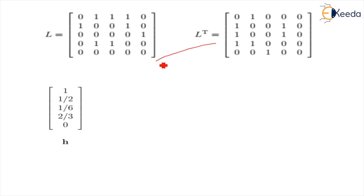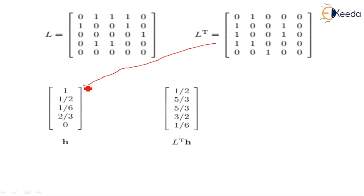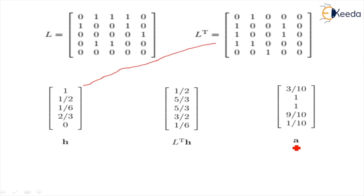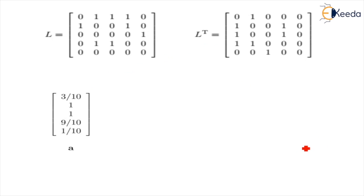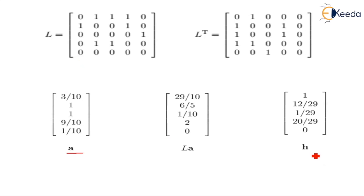We then multiply L-transpose by the calculated H to get the updated L-transpose × H. We normalize again by dividing by the largest number to get the new authority matrix A. Then L is multiplied by the new authority matrix to get L × A, which is again normalized to produce the updated hub matrix H. This iteration continues.